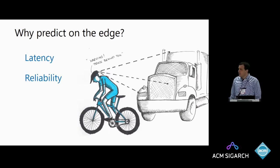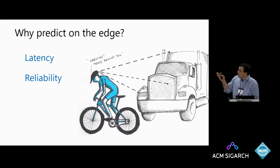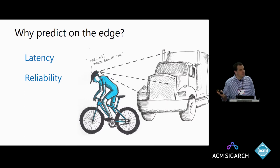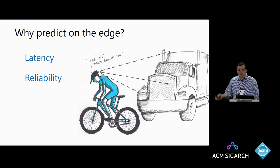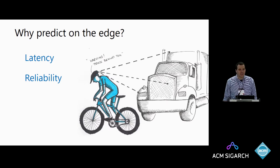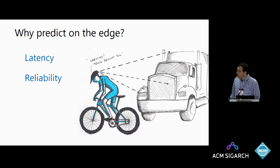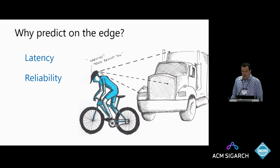So why do we want to predict on the edge? A primary reason is latency. If you imagine a smart bicycle helmet that looks behind you and tells you when a truck's coming, you can't afford to wait those 500 milliseconds for a round trip to the cloud. Another reason is reliability — if a helmet like this talks to the cloud over Bluetooth through your smartphone over LTE, you're depending on a whole networking stack. I don't want to trust my life to my Bluetooth connectivity or my smartphone having enough signal.